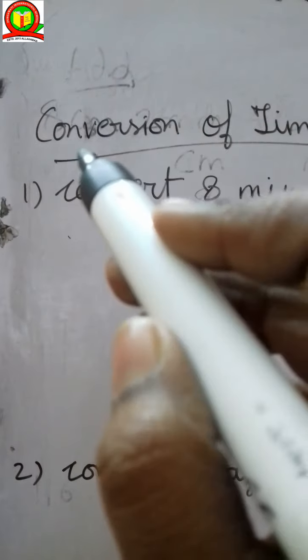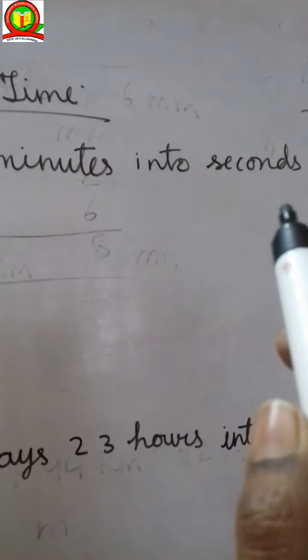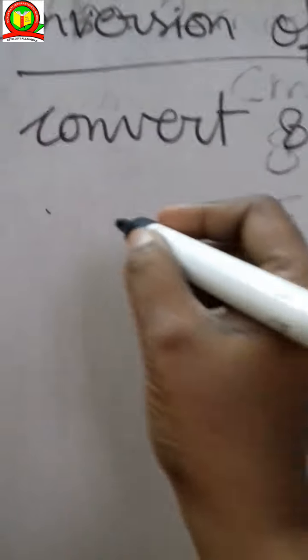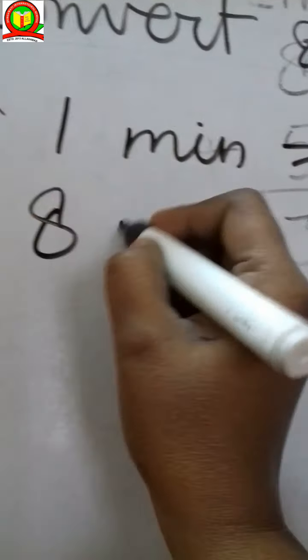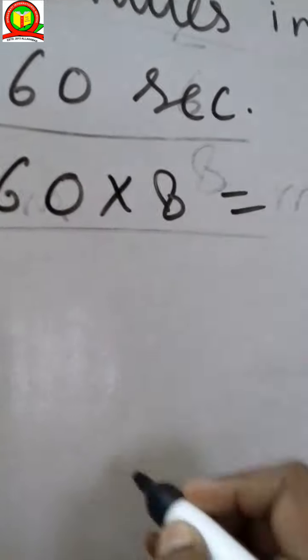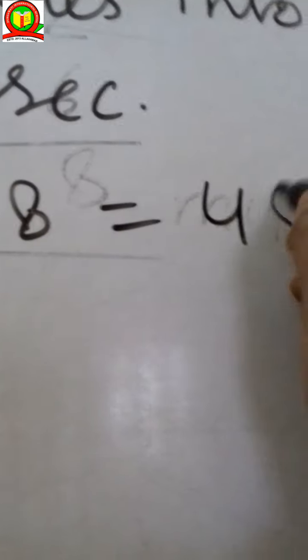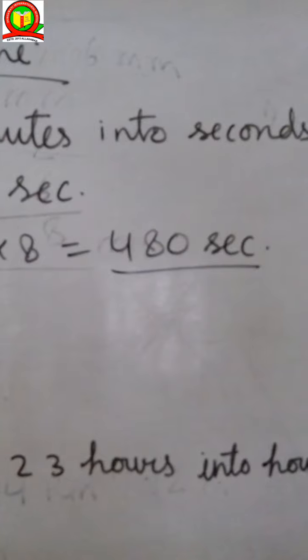Now I am talking about conversion of time. First question is convert 8 minutes into seconds. How can we convert it? First of all, we have to write 1 minute is equal to 60 seconds. We have 8 minutes, so 60 into 8. How much we have? It's 480 seconds. The answer is 480 seconds.